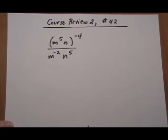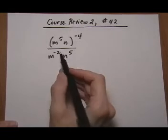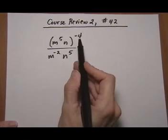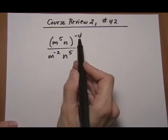Course Review 2, number 42. Here we have an expression that has power on the outside, so we have power to power happening here.